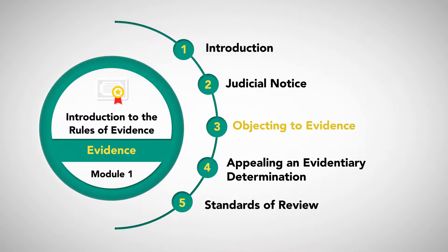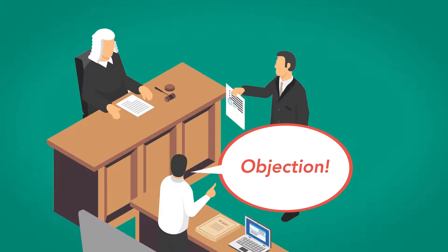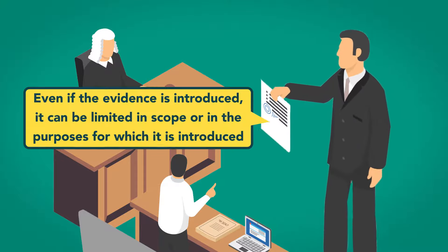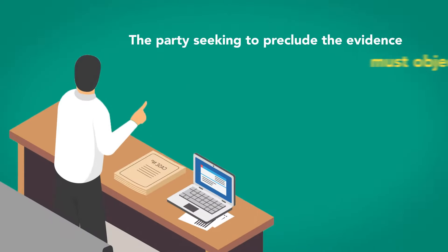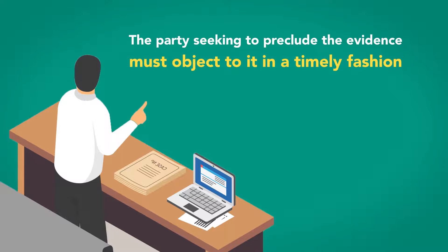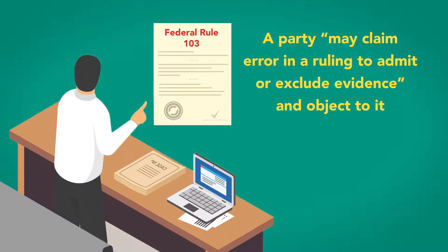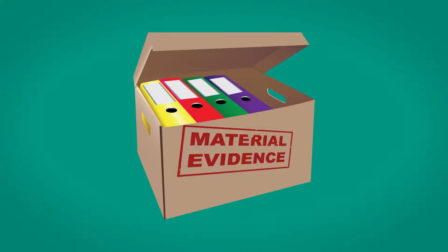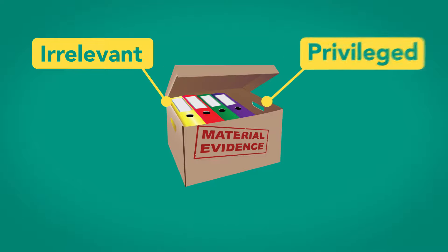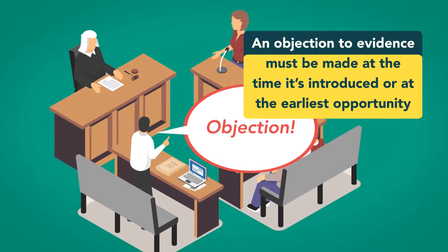Objecting to Evidence. If a party seeks to introduce objectionable evidence, the other party can seek to deny its admission through objection. Moreover, even if the evidence is introduced, it can be limited in scope or for the purposes for which it's introduced. Rule 103 of the Federal Rules of Evidence provides that a party may claim error in a ruling to admit or exclude evidence and object to it. A party can object for myriad reasons — for example, the evidence may be irrelevant, privileged, not authenticated, or cumulative and a waste of the court's time. An objection to evidence must be made at the time it's introduced, or at least at the earliest opportunity.